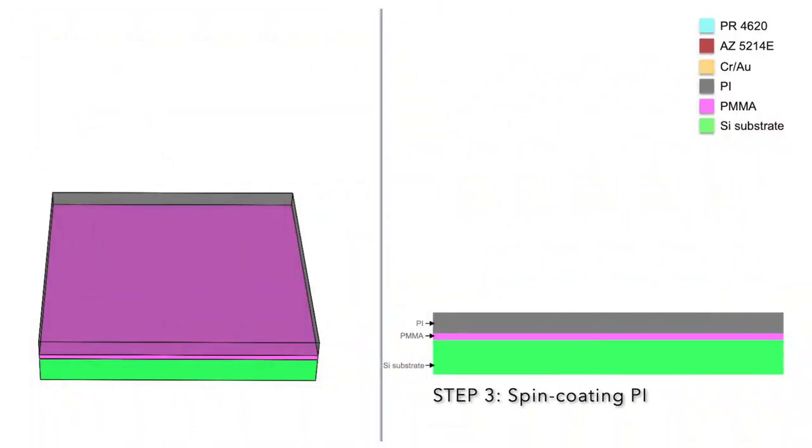Now, let's spin coat the bottom encapsulation layer of polyimide which will be used to protect our device.